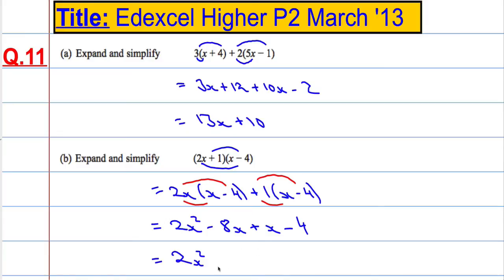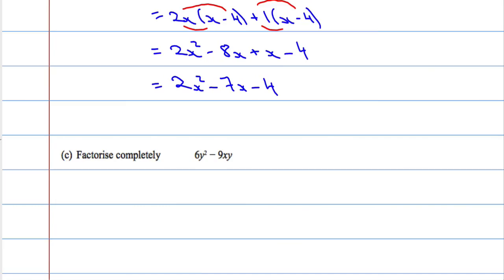And we still have this negative 4. That's part B done. And then part C: factorize completely. This is giving you a hint. If it says completely, it means a number and a letter needs to be factored out.